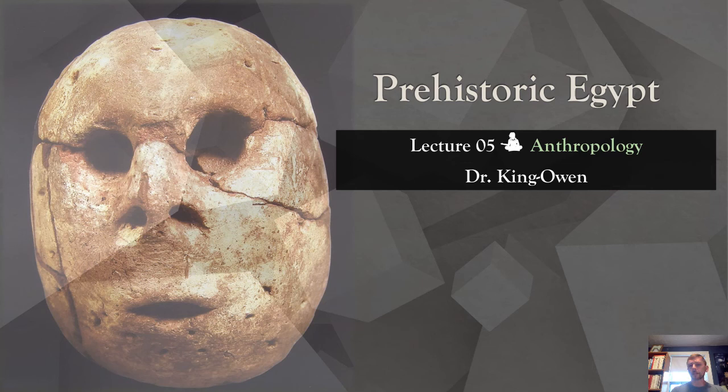Welcome to lecture five for anthropology. We'll be taking a look at prehistoric Egypt in this lecture, looking at the development of cultures in ancient Egypt before we get to the period where we start thinking of what is classically Egyptian with kings and tombs. We'll try to see what we can learn about these early Egyptian peoples and what they may have contributed to later Egyptian culture.